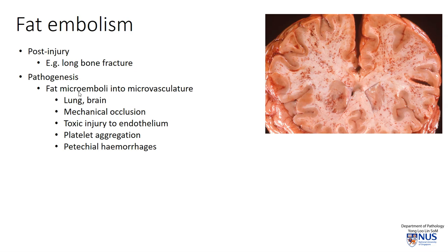These little fat microemboli go into the small blood vessels and they affect the lung and the brain. They can, of course, give rise to mechanical occlusion of the small vessels, but also they can cause toxic injury to the endothelium. So there is usually platelet aggregation and small petechial hemorrhages throughout the parenchyma, as you can see here.